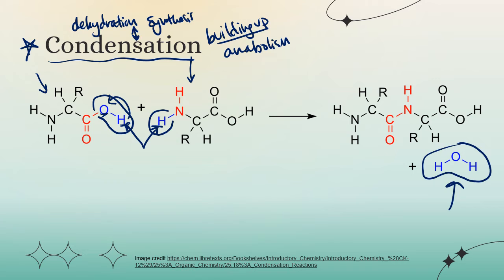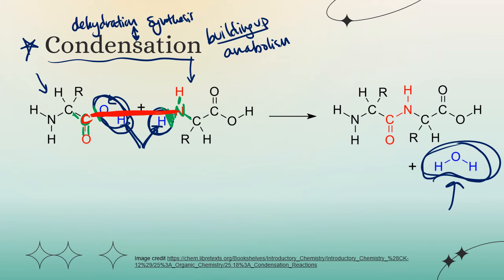In condensation, we take an -OH group off one molecule and a hydrogen off the other; they combine to release water. Carbon needs four bonds — if we remove the OH, that carbon only has three. Nitrogen is quirky and needs three bonds, but after losing the hydrogen it only has two. So those two atoms find each other to form the last bond each needs. Carbon now has four bonds; nitrogen has the three it needs to be stable. A chemical bond has formed between the two monomers — this is condensation.